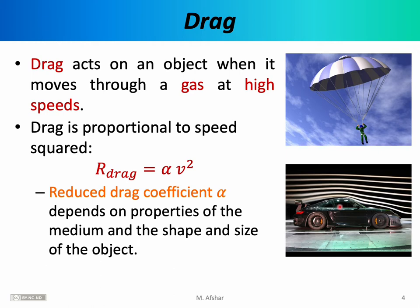If you're designing a sports car, on the other hand, you want to minimize alpha — you want the reduced drag coefficient for a Porsche to be as small as possible. Automobile manufacturers measure the reduced drag coefficient of their designs by placing the cars inside wind tunnels and measuring the force that air exerts on the object.